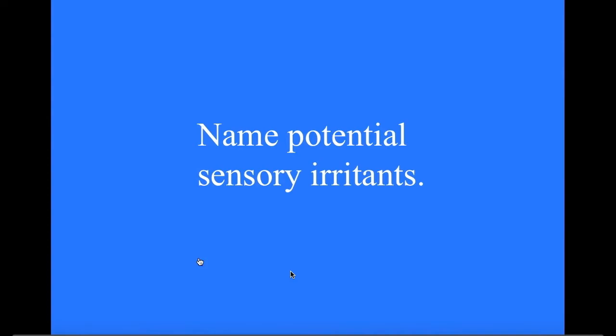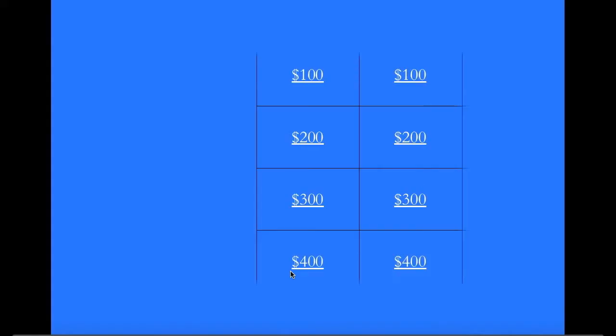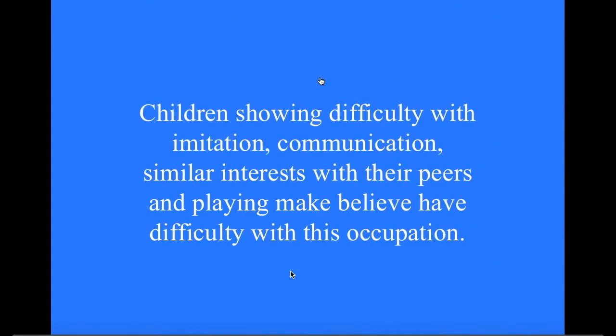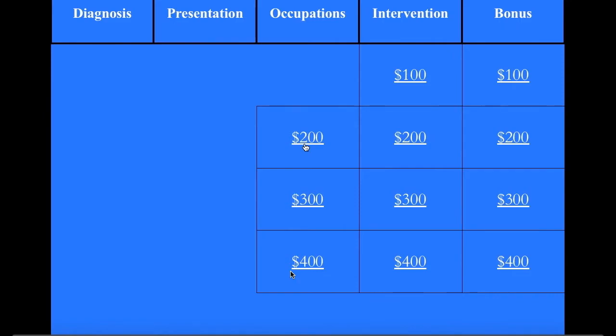Presentation for 400: Name potential sensory irritants. What are lights, sounds, physical touch, and textures? Occupations for 100: Children showing difficulty with imitation, communication, similar interest with their peers, and playing make-believe have difficulty with this occupation. What is social participation?